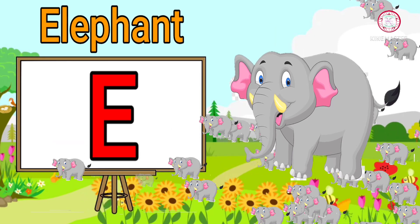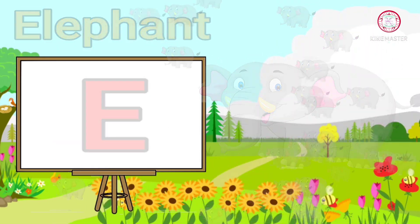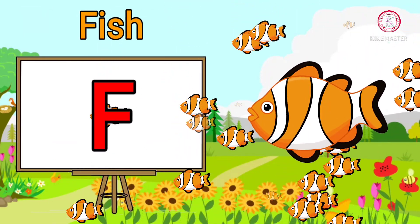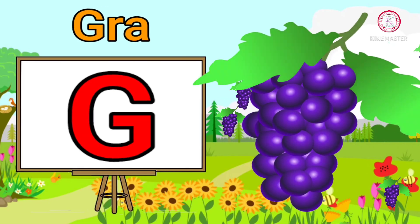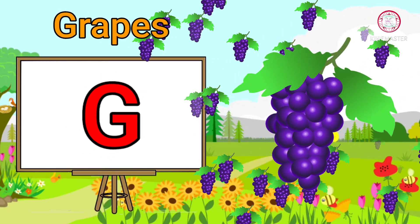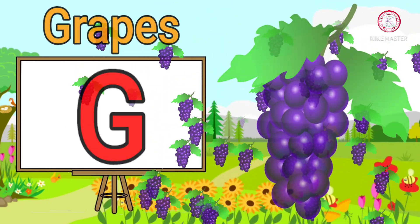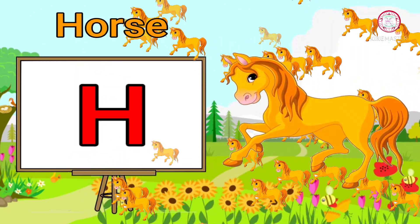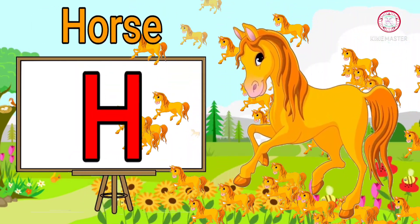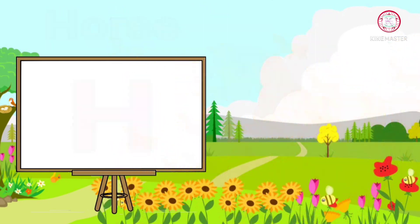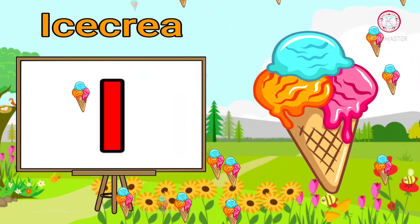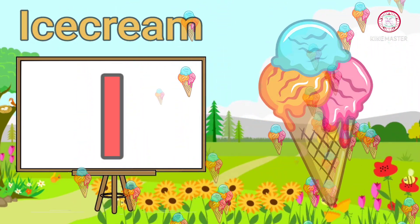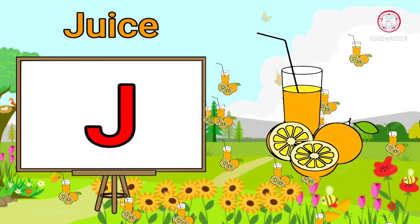E for elephant. F for fish. G for grapes. H for horse. I for ice cream.